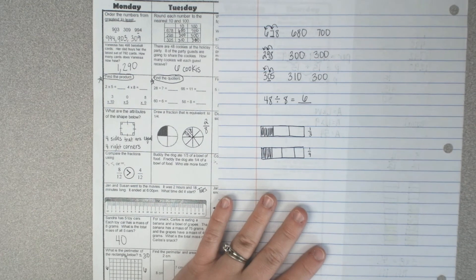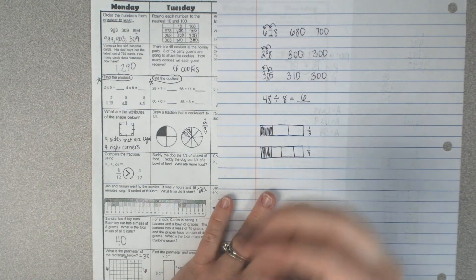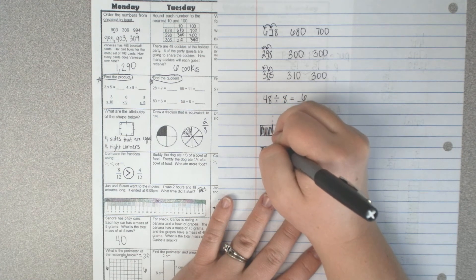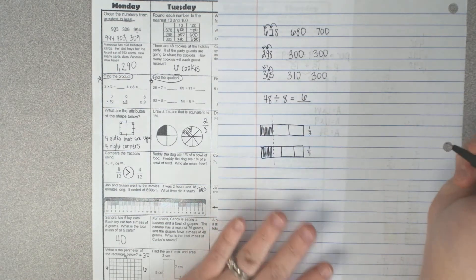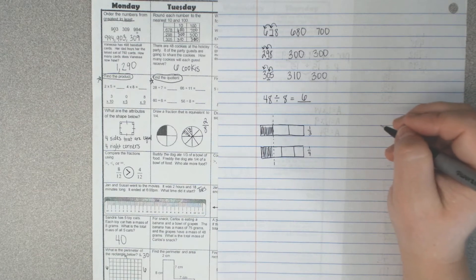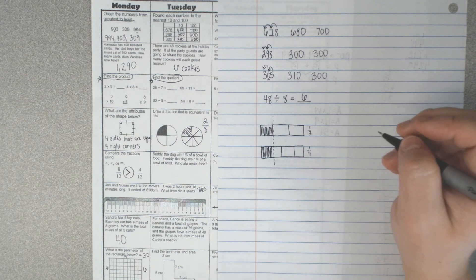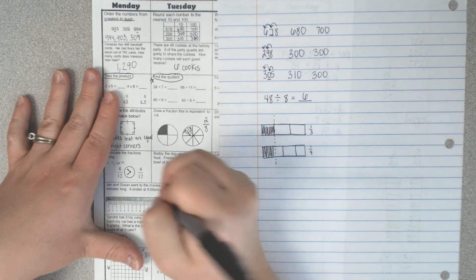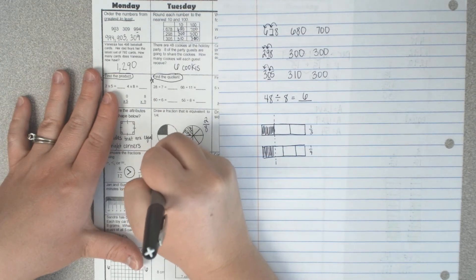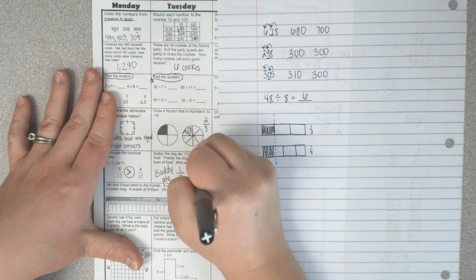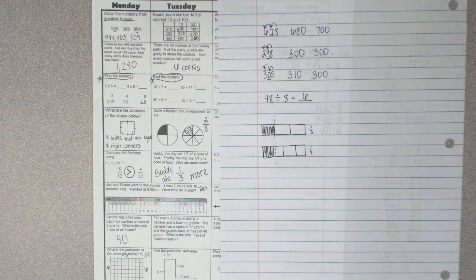You can't really tell too easily, but in fact, if we put a dotted line all the way down, there is more in a third than there is in a fourth. Not by much, but there is because you don't have to share as much as you do with the fourth. You get smaller pieces. So one third. So Buddy ate more.